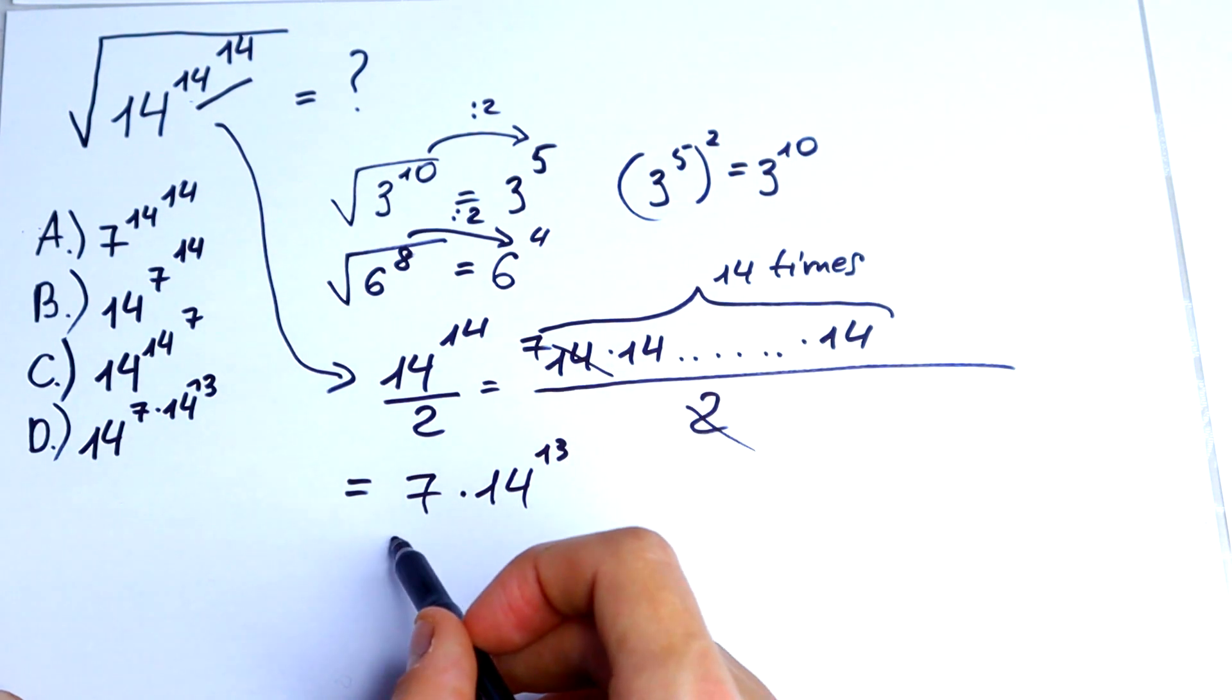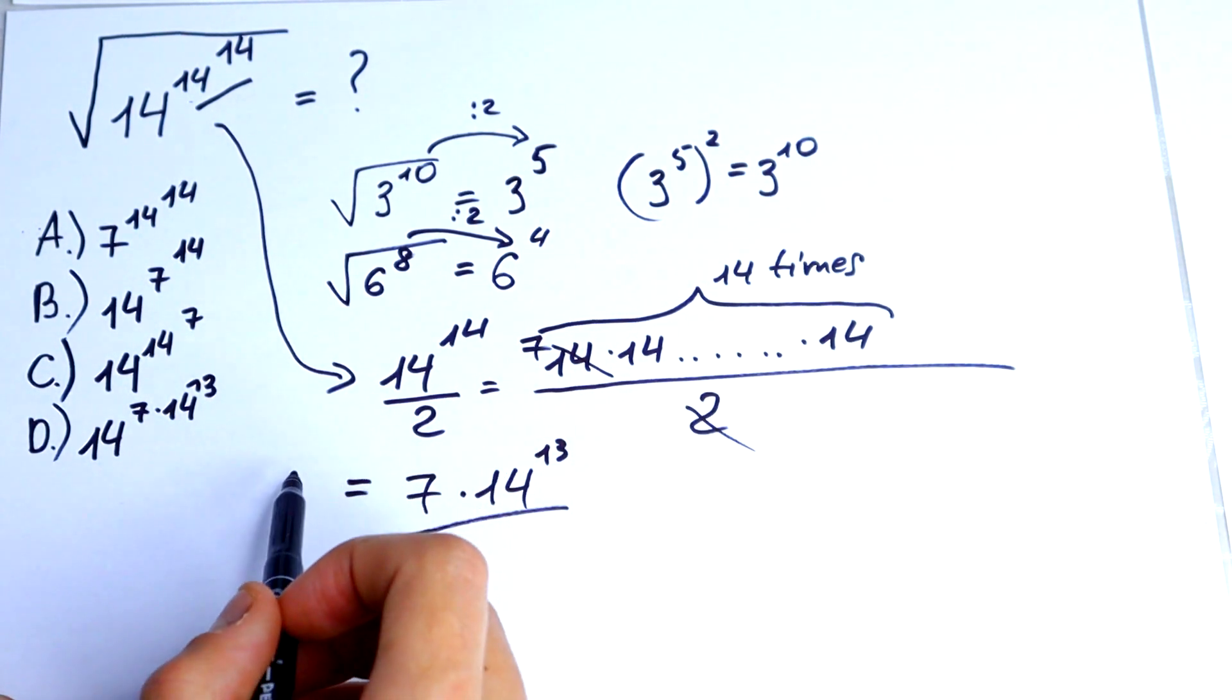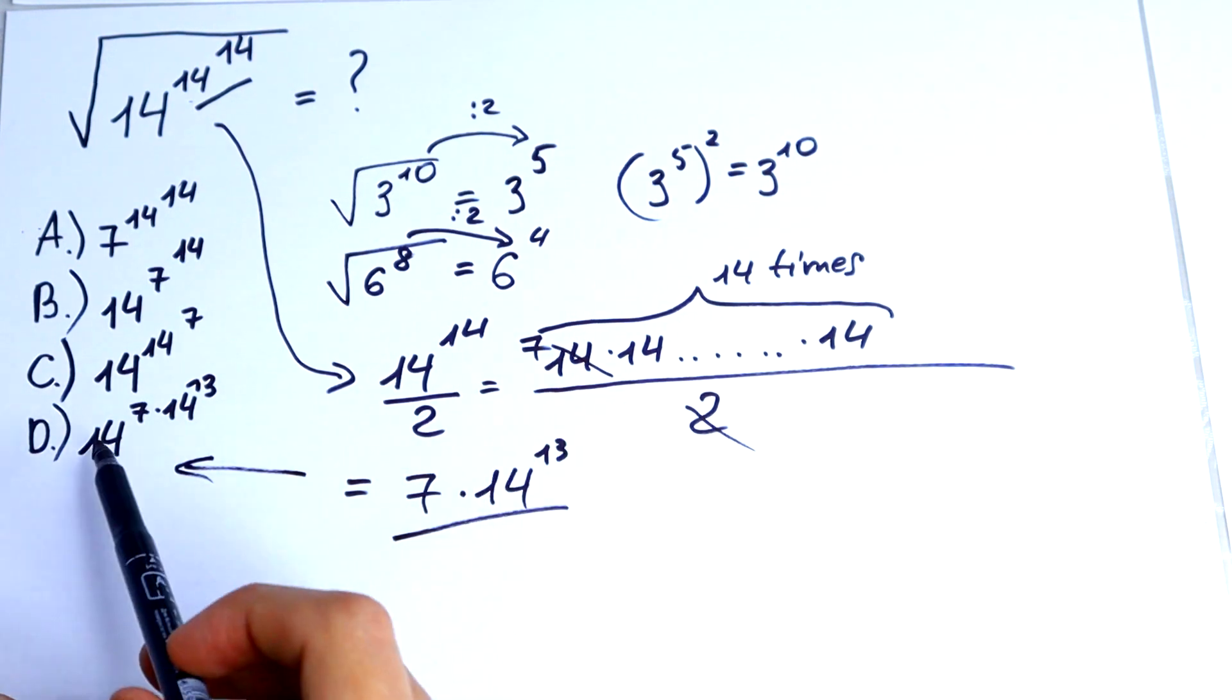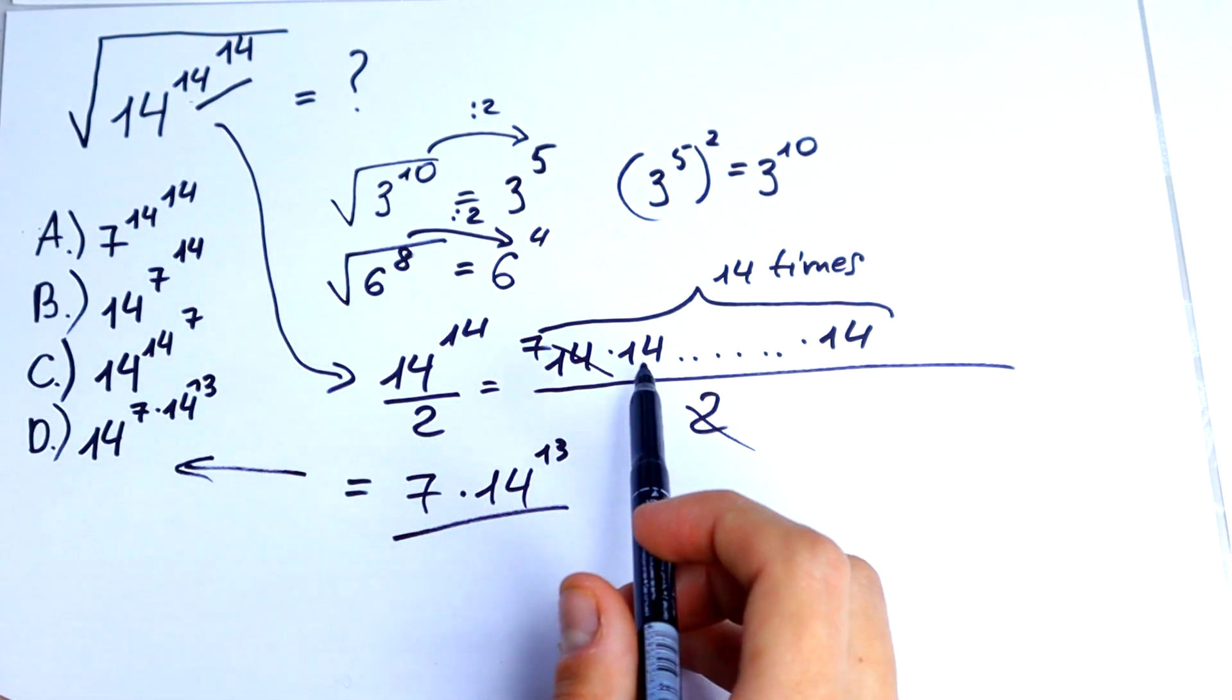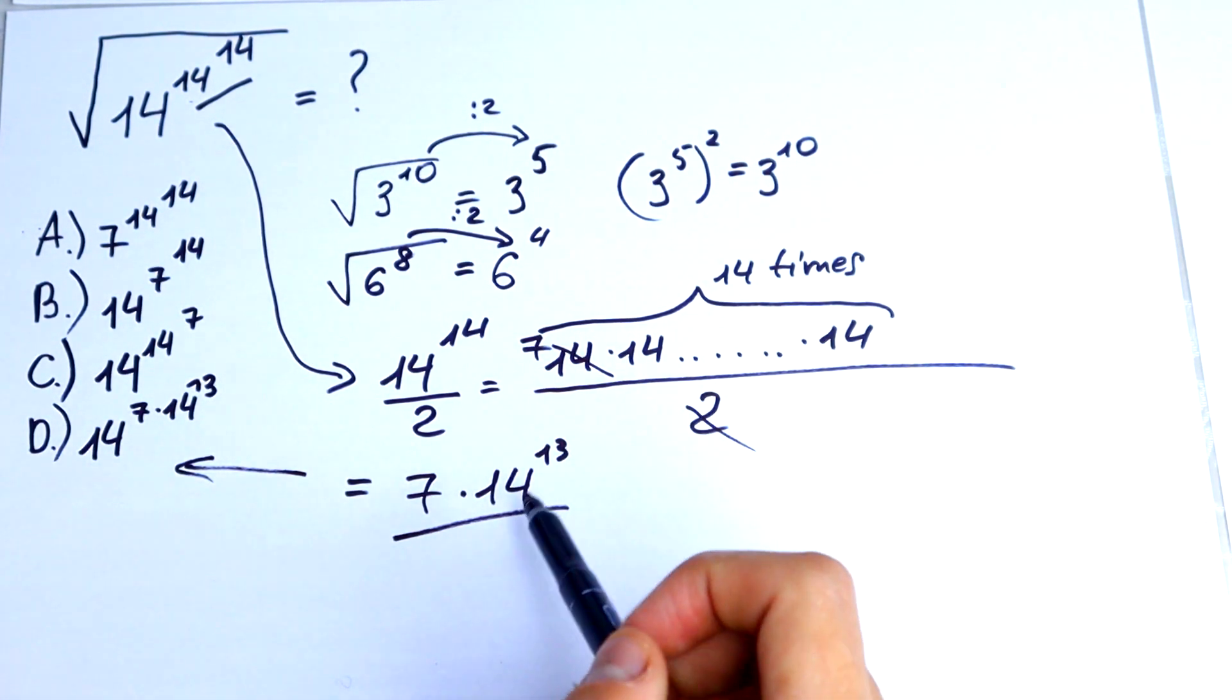So this is the power, and the answer would be D: 14 to the power of 7 times 14 to the 13th power.